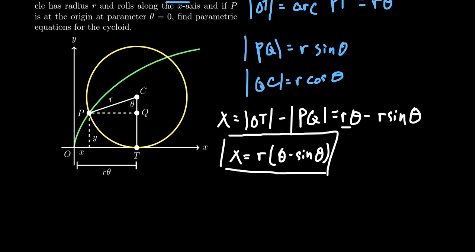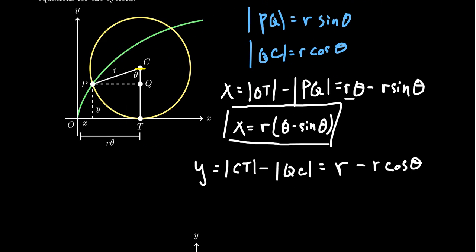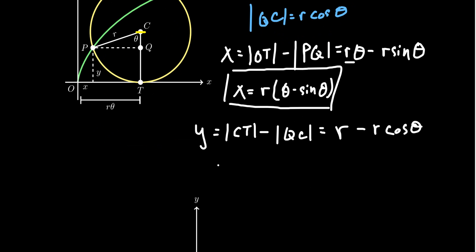What about Y? Y is going to be this distance right here. By a similar strategy, we're going to take the whole distance CT and subtract from it QC. Y will equal CT minus QC. CT is a radius, so its length is R, and QC is R cosine theta. If we were to factor out the R, we're going to get Y equals R times 1 minus cosine theta. These boxed equations give us a parameterization of this cycloid.